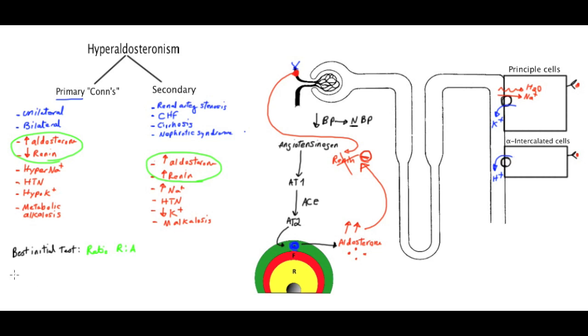And if we're still not sure, we can do the most accurate test, which is to sample the venous blood draining the adrenal glands, which will show high aldosterone levels.